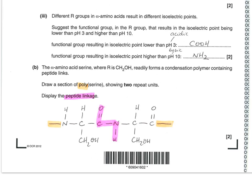We're now asked about what different R groups could cause different isoelectric points. What would cause an isoelectric point lower than pH 3? That's obviously an acidic pH, so you need an acidic group — the easiest one to go for is the COOH group. For an isoelectric point higher than pH 10, that's obviously basic, so an NH2 amino group gives a high pH.